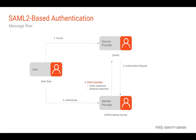In the next step, the identity provider validates the authentication request and prompts the end user to enter their credentials. After successful authentication, the identity provider creates a session and generates an XML message called a SAML assertion, and passes that back to the service provider. The response contains the name of the authenticated user and the requested attributes, if any.